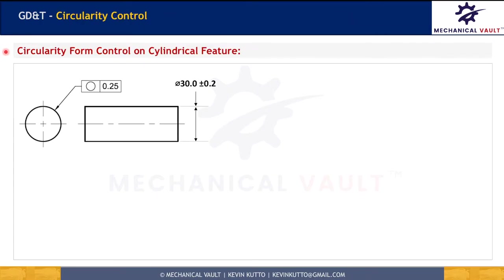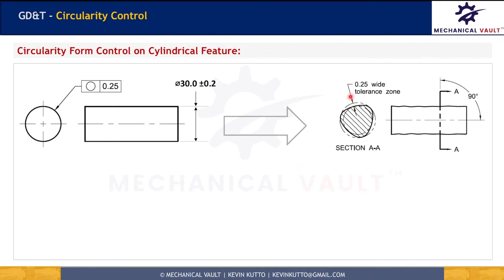Let's begin first with the circularity control. A circularity control is a form control, and that means every form control has to control the surface variation. Because of that, it will never have any datum reference in the feature control frame. The feature control frame for circularity has two blocks in it: the first block shows the call-out for circularity which is a circle, and the second block shows the tolerance for circularity. It's very important to note that there is no diameter symbol here.